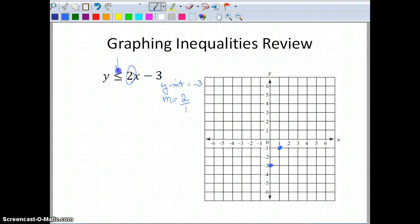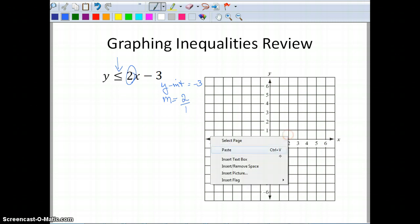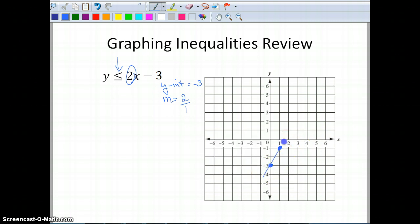I'm going to look at the symbol that I have. It's going to tell me if I need a solid line or a dashed line. And I have less than or equal to. So that tells me I'm going to have a solid line. So I'm going to take my straight edge and connect these points.